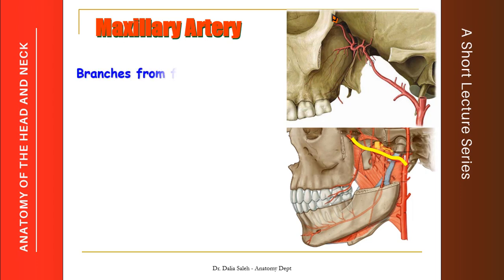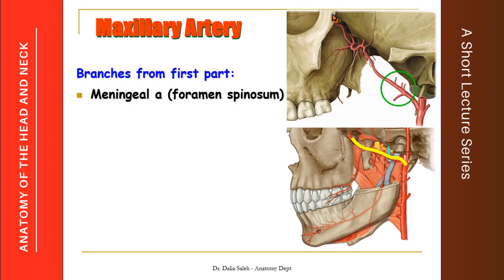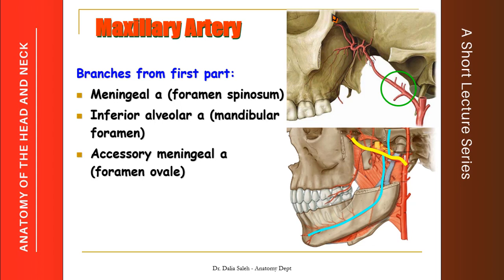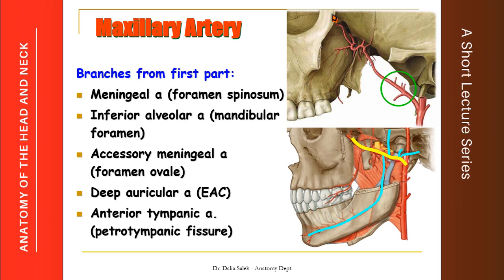From the first part of the maxillary artery, we have the middle meningeal artery, which passes to the meninges through the foramen spinosum. We have the inferior alveolar artery, which enters the mandibular canal through the mandibular foramen. We have the accessory meningeal artery, which enters the middle cranial fossa through the foramen ovale. And we have two small arteries: the deep auricular artery to the external acoustic meatus, and the anterior tympanic artery, which supplies the lateral surface of the eardrum through the petrotympanic fissure.